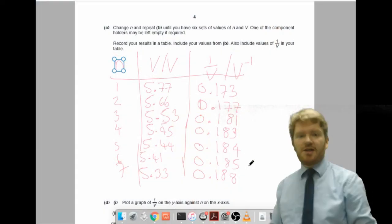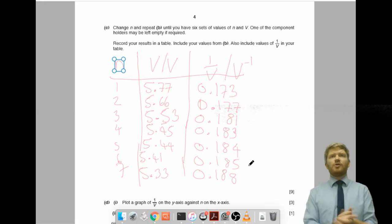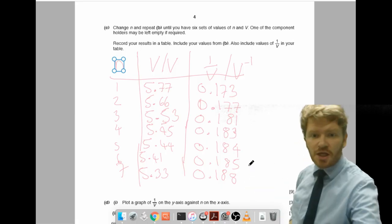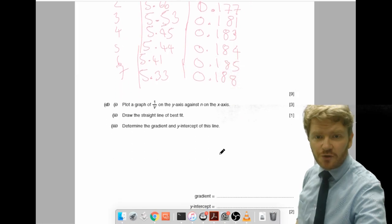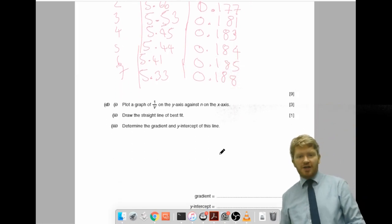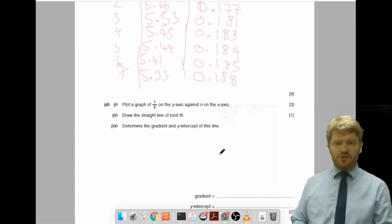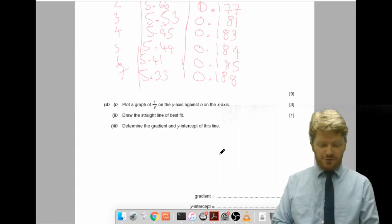So, I have now managed to collect all of the data that I need. And I'm now asked to plot a graph of 1 over V on the Y axis against N on the X axis. And then draw a straight line of best fit.